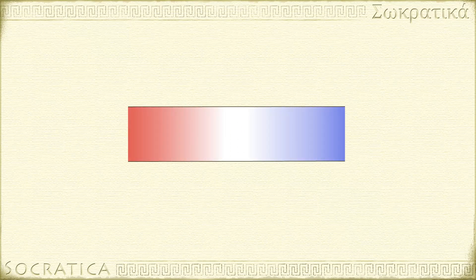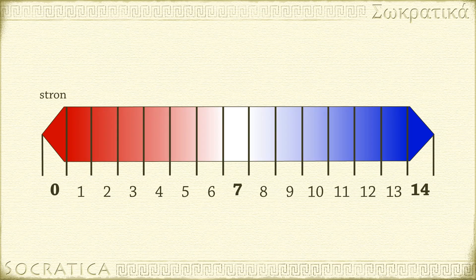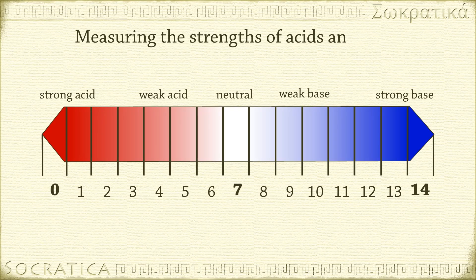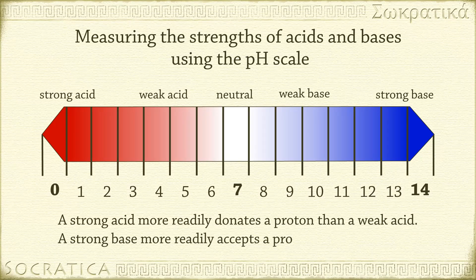We'll discuss the chemical behavior of acids and bases more in another video, but for now, let's focus on how we measure the relative strengths of acids and bases using the pH scale. A strong acid more readily donates a proton than a weak acid. A strong base more readily accepts a proton than a weak base.